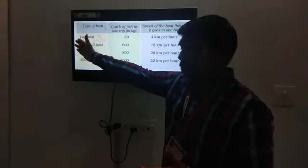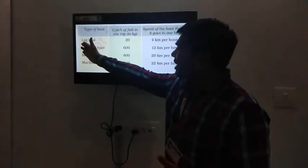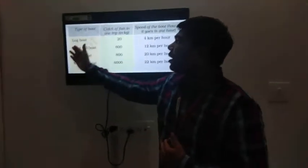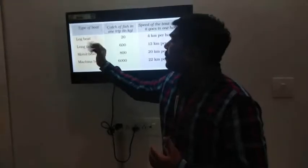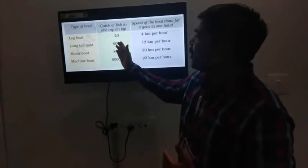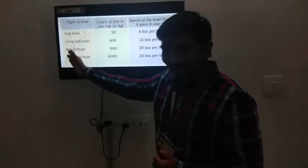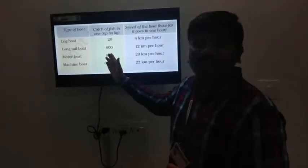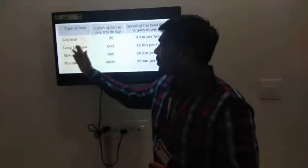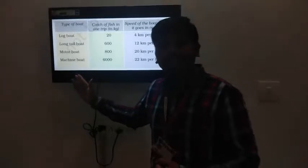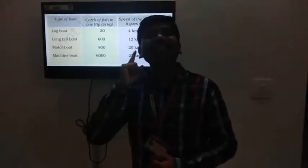As we know, log boat brings 20 kg of fish in one trip. Long tail boat brings 600 kg of fish in one trip. Motor boat brings 800 kg of fish, and the bigger machine boat brings about 6000 kg of fish in one trip.